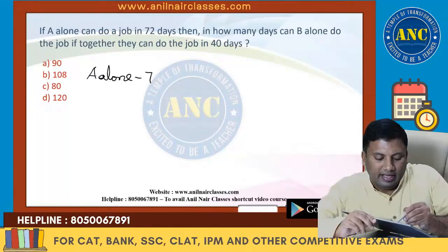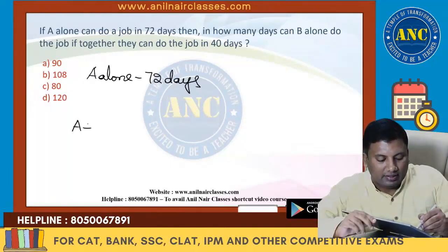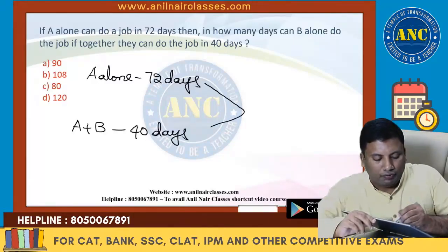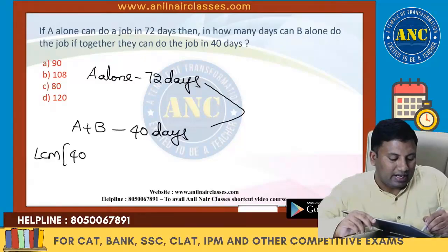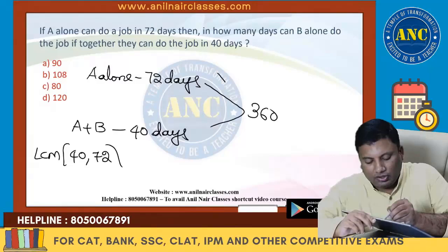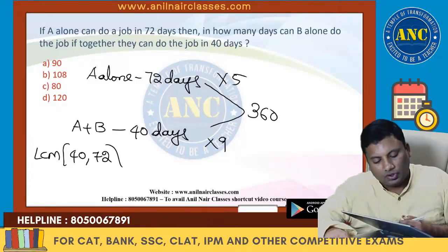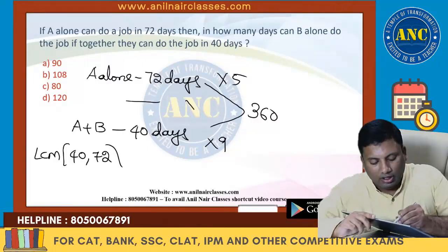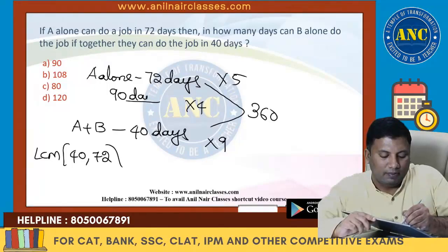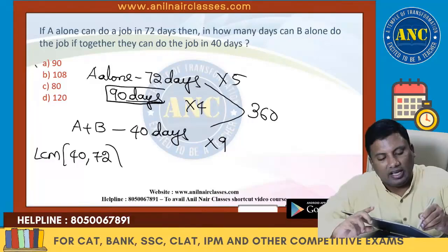A alone: 72 days. A+B together: 40 days. LCM of 40 and 72 is 360. A = 5 units/day, A+B = 9 units/day, so B = 4 units/day. B alone = 360/4 = 90 days. This is an exam model question.